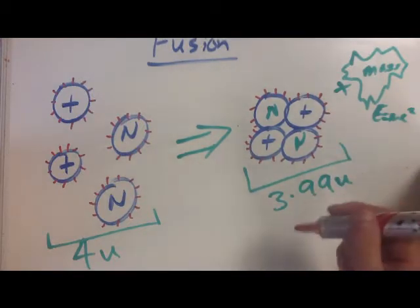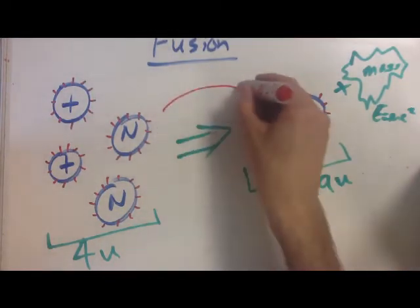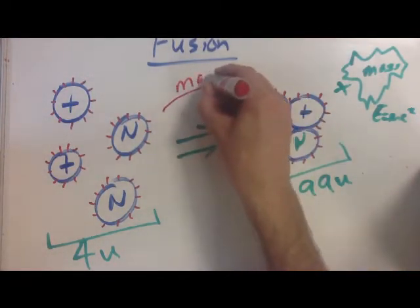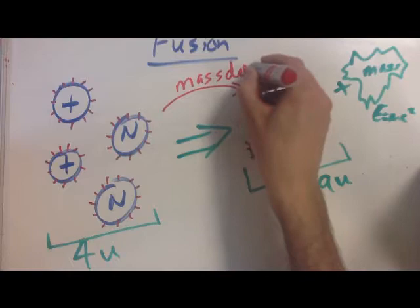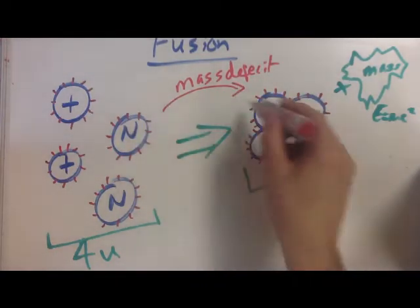Now moving from here to here, we get something called a mass deficit. That's pretty obvious, pretty self-explanatory - it means the mass goes down. The amount it goes down is the mass deficit.